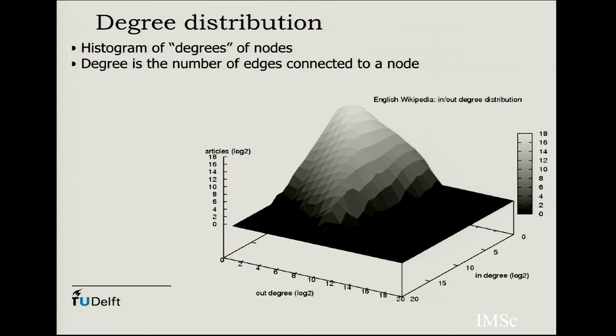You can generalize from individual degree to a degree distribution — looking at the set of all degrees measured in a particular graph. The English Wikipedia article in-and-out degree distribution, showing what articles quote what other articles, has an interesting non-flat structure. There are features of the degree distribution that are relevant to how natural networks are formed.